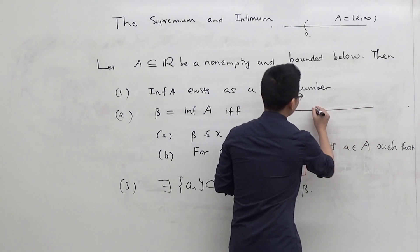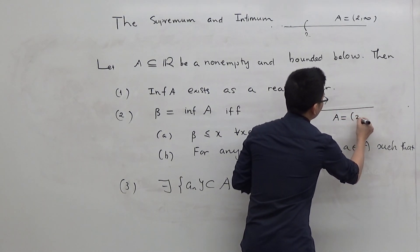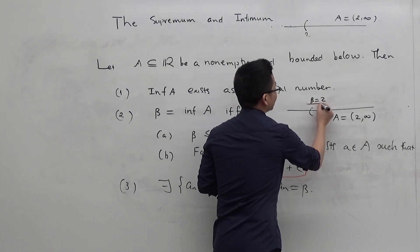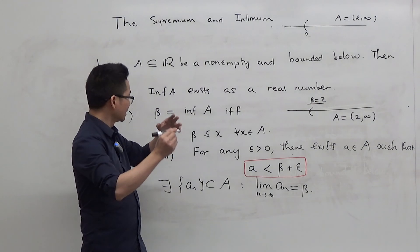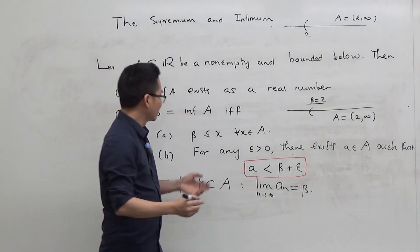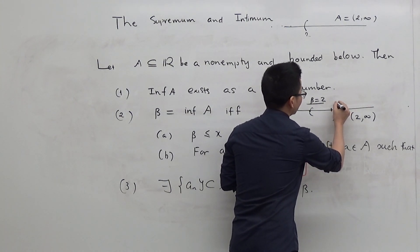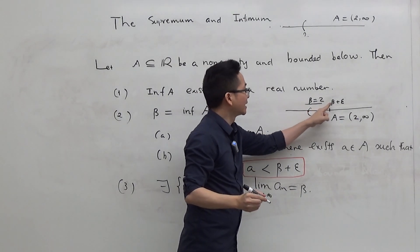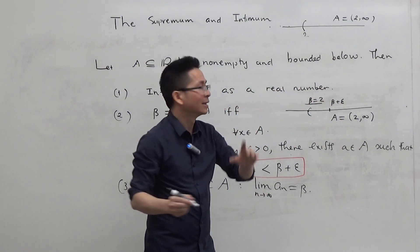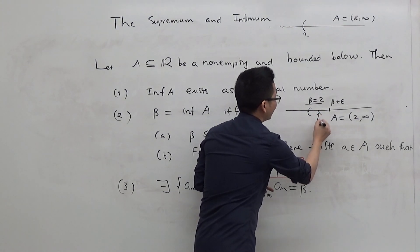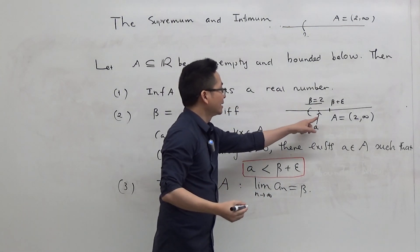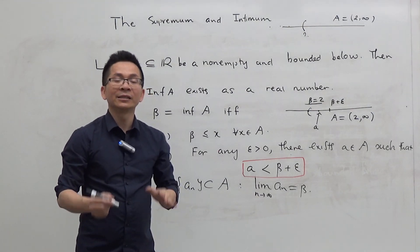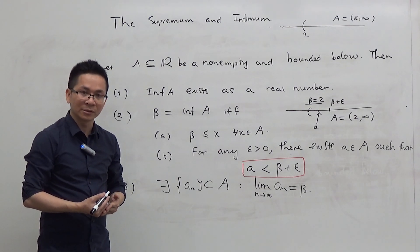For example, if A is the interval from 2 to infinity, beta equals 2 is the greatest lower bound, or the infimum, of A. If you add a positive real number epsilon to beta, then since beta is the greatest lower bound, beta plus epsilon cannot be a lower bound of A, so there must be some element a in A such that a is strictly less than beta plus epsilon. Similar to the situation with a supremum, this is a very important property that we will use throughout the course.